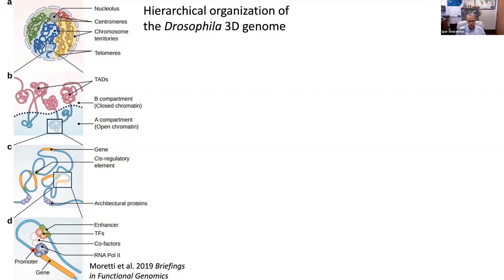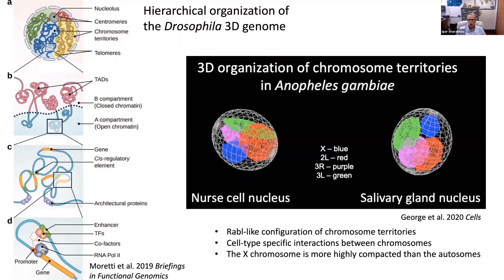None of that information exists for mosquitoes, so we decided to fill this gap. Previously, we used oligopaint probes to study chromosomal territories — just the highest level of that hierarchy. We found that, like in Drosophila, chromosomal territories in mosquitoes have a Rabl-like configuration, that chromosomal territories interact in a cell-type specific manner, and that the X chromosome is more highly compacted than autosomes.